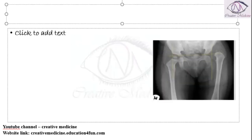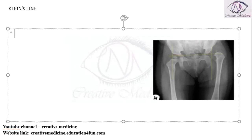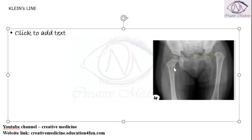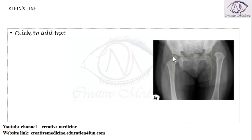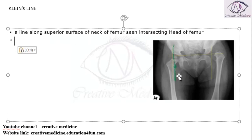Klein's Line is a line which is drawn superior to the neck of the femur, intersecting with the head of the femur. So this is the Klein's Line — a line drawn from the superior surface of the neck of the femur intersecting with the head of the femur.